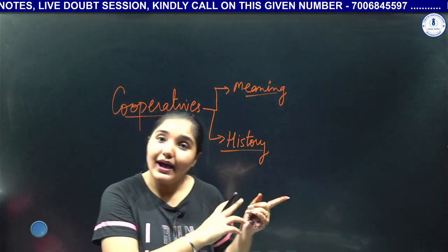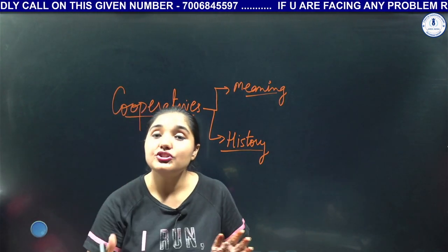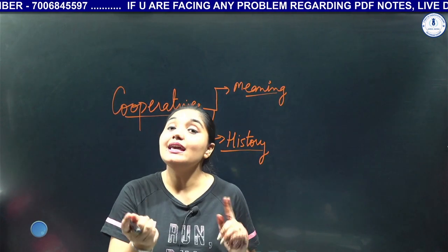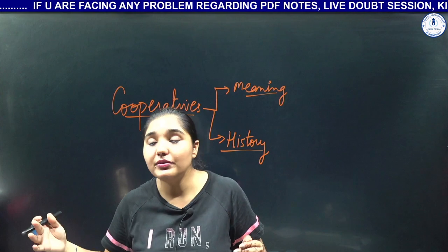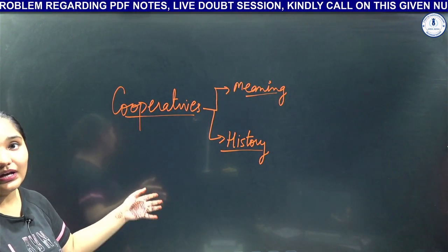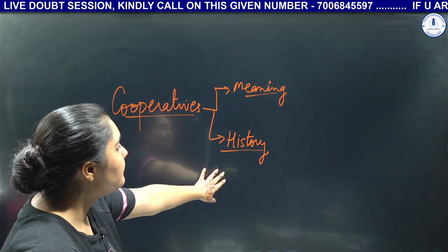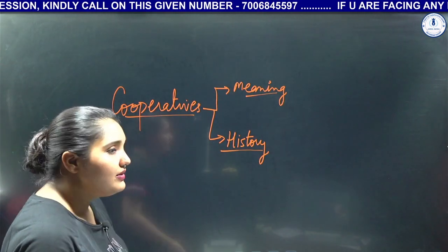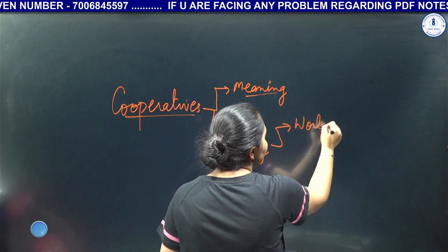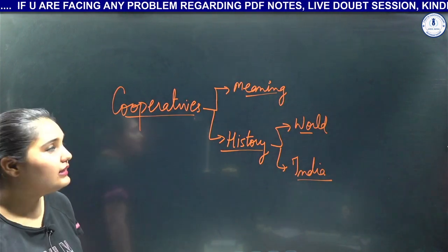Every revolution and movement in the world has had a history behind it — why it came, why that revolution or movement was needed. Similarly, cooperatives also have a history: why did cooperatives need to come, what was the necessity of introducing cooperatives? We need to study that history. When we look at the history of cooperatives, obviously things arrive late in India, so we need to look at it in two parts: first, where cooperatives appeared in the world, and then how they came to India.